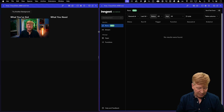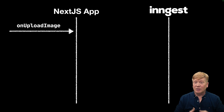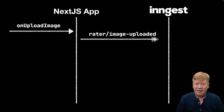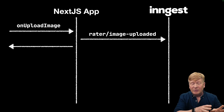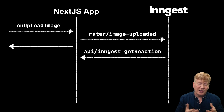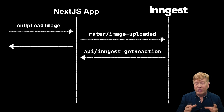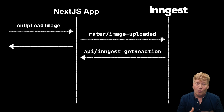Now let's talk about what's going to happen next. We've got our Next.js app and our Ingest server, and we have that onUploadImage server action. We sent out our radar-image-uploaded event to Ingest — that's great because the Next.js app can go off and field the next request. What happens next is that Ingest is going to call back to our server on a specific endpoint — in this case, API/ingest — with the function invocation of getReaction, because we're binding the event of radar-image-upload to that function. That's how the communication between Ingest and the Next.js app works: it's just calling an API endpoint.